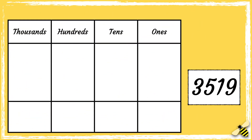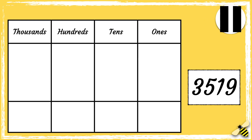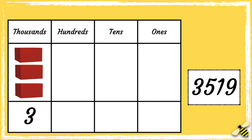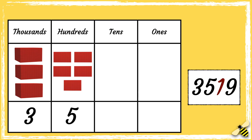Here is a number: three thousand five hundred and nineteen. How would this number look on a place value grid? Pause the video to give you time to work out the answer. Press play when you're done. So let's see how you got on. This number has three thousands, five hundreds, one ten, and nine ones.